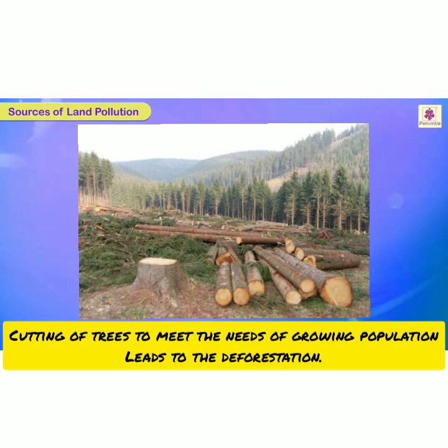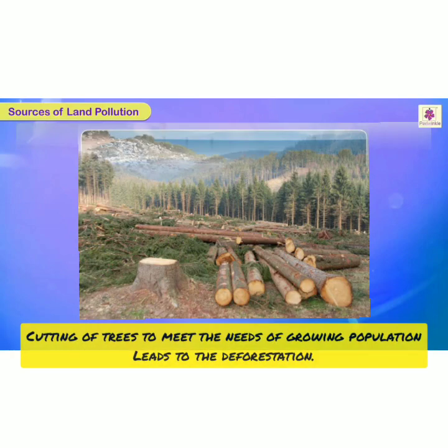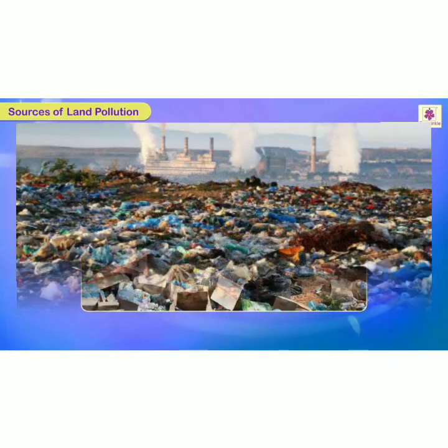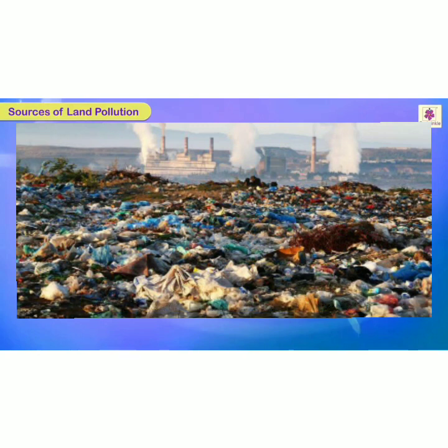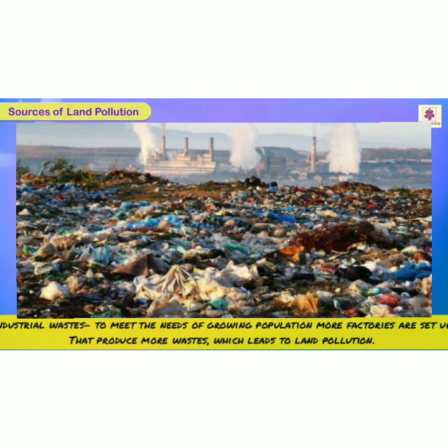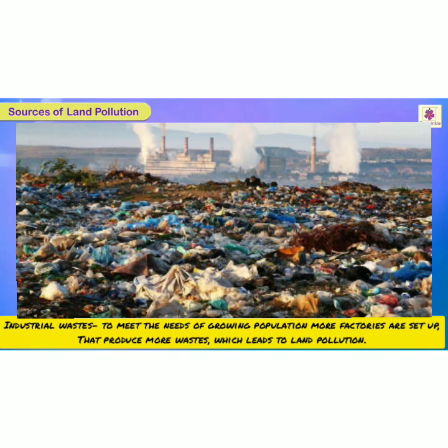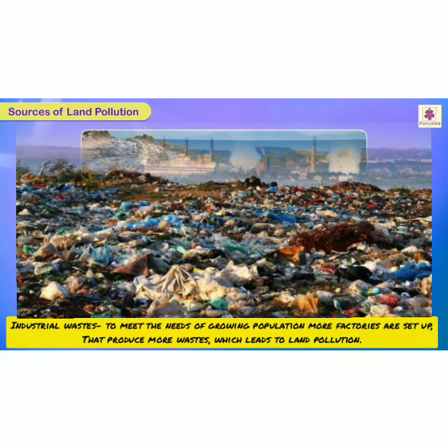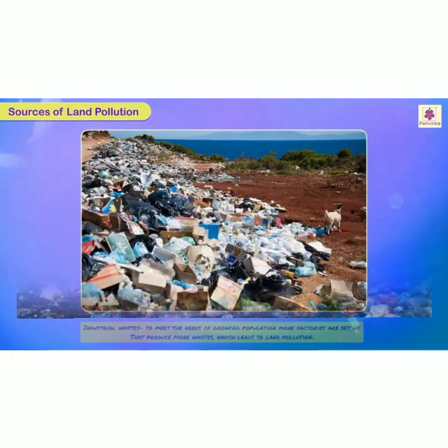Without fertile soil, the earth can't grow. So that's how cutting down trees causes land pollution. The next cause of land pollution is industrial wastage. To meet the needs of a growing population, more factories are set up, and they produce more wastage which leads to land pollution. So these are some causes of land pollution.